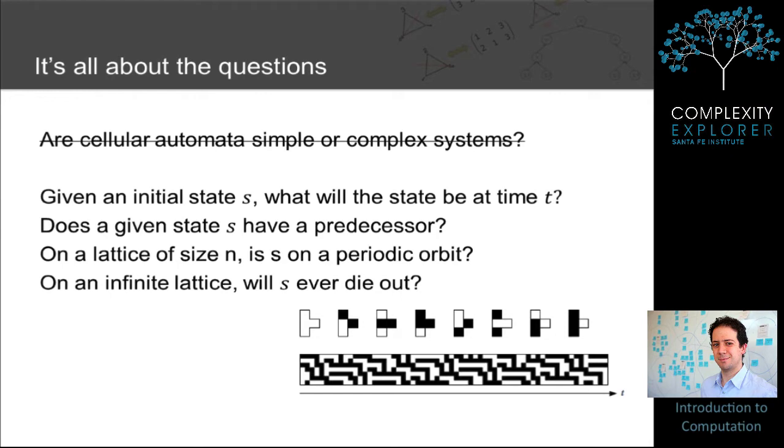For example, if you wanted to know, given some initial state s of the cellular automaton, what will the state be at time t? This may or may not be a complex question. Or does a given state s have a predecessor, a state from which it came?